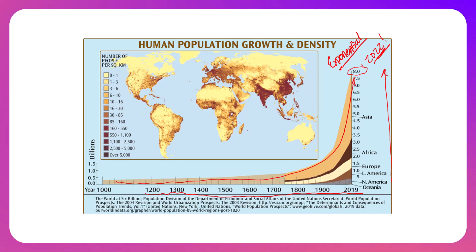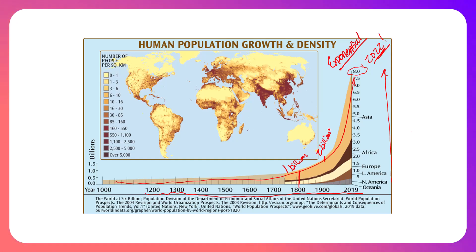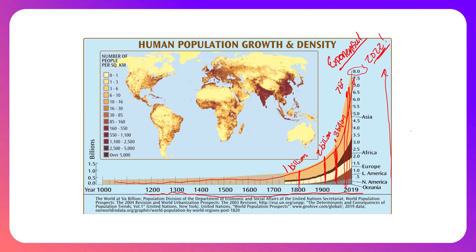The human population hit 1 billion people in 1804 — the first time we reached 1 billion people. It took us 123 years, up until 1927, to reach 2 billion people. It only took us then 33 years to reach 3 billion. So going from 1 to 2 to 3 billion, it took 123 years and then down to 33 years. We hit 7 billion people in 2011, and it's only been 11 years between us going from 7 billion to 8 billion people.